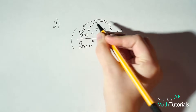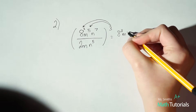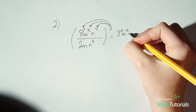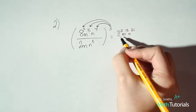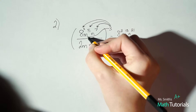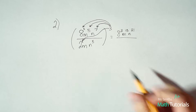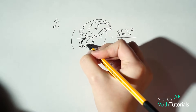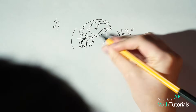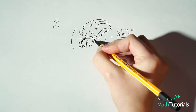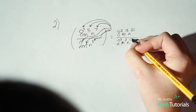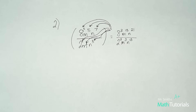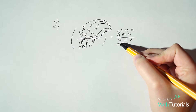Continuing to distribute this 3: m to the 5th brought to the power of 3 — 5 times 3 is 15. Distribute this 3 to the n: n to the 7th brought to the power of 3 — 7 times 3 is 21. Now we need to do the same thing with the bottom. Distribute the 3 to the 2 — remember that 2 has an understood power of 1, so 1 times 3 is 3. Distribute the 3 to the m — m has an understood exponent of 1, so 1 times 3 is 3. Lastly, distribute to n to the 5th: 5 times 3 is 15. Now let's simplify 8 to the 3rd power and 2 to the 3rd power.